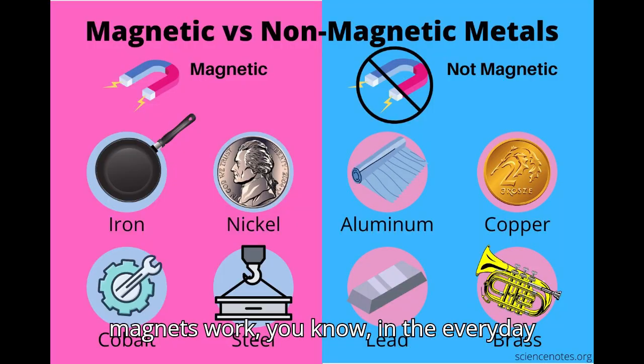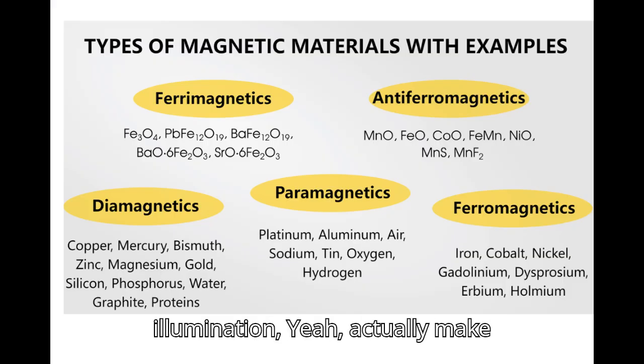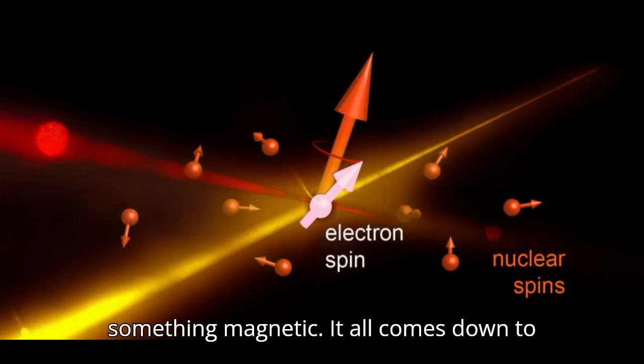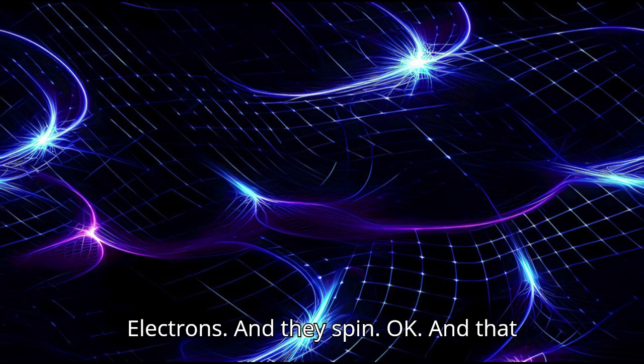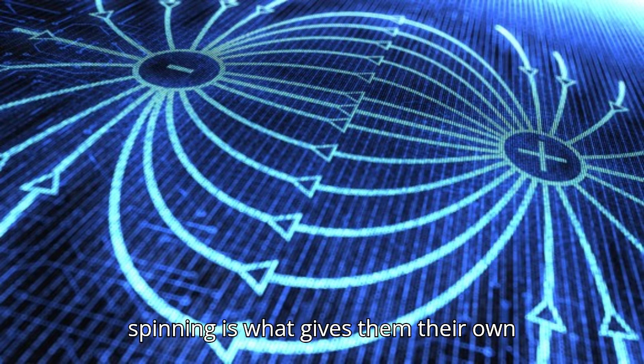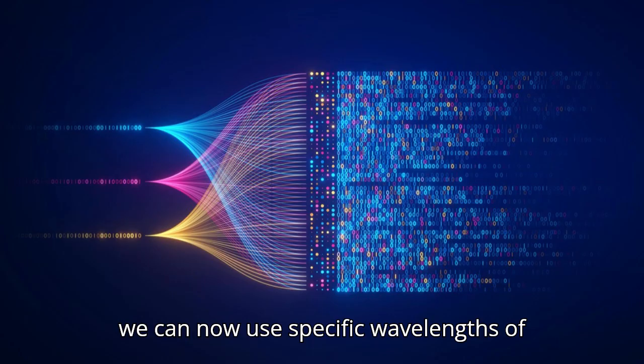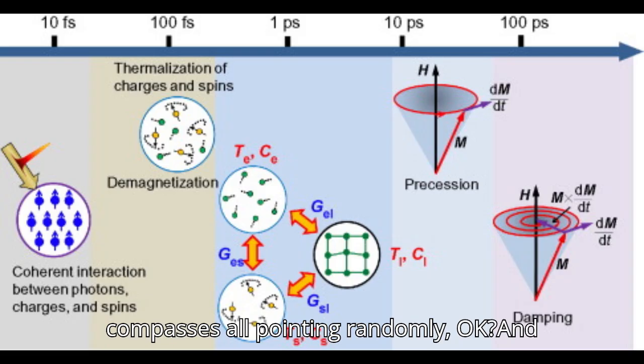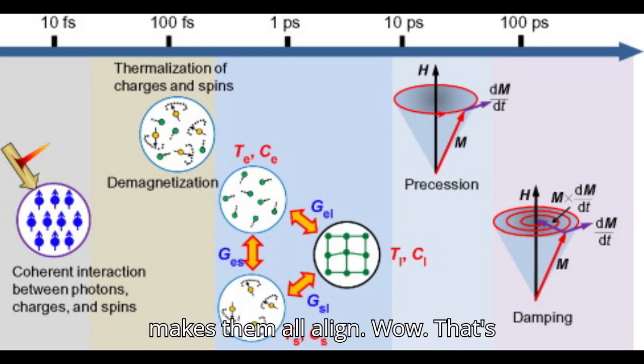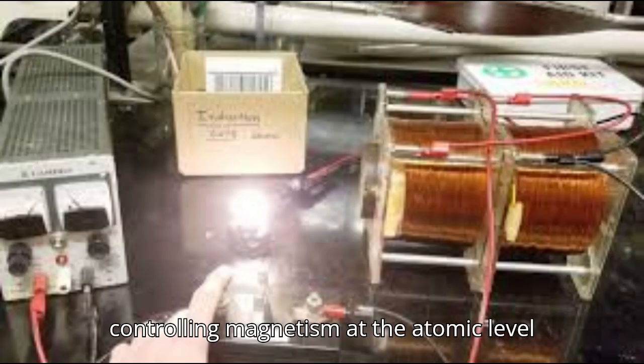Okay, so let's unpack this. I get how magnets work in the everyday world, but how can light, something we think of as illumination, actually make something magnetic? It all comes down to these tiny particles within atoms called electrons, and they spin. That spinning is what gives them their own tiny magnetic field. What's fascinating is that we can now use specific wavelengths of light to actually flip the direction of these spins. Imagine a bunch of tiny compasses all pointing randomly, and suddenly a beam of light comes along and makes them all align. That's essentially how light can induce magnetism.